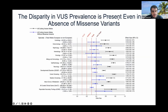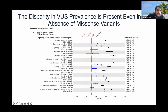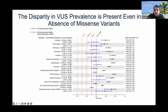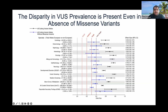The disparity in VUS prevalence is present even in the absence of missense variants. We redid the analysis across each medical specialty — black represents all coding variant alleles, blue represents after removing missense variants. The y-axis is the effect size of the significant difference. All differences remain significant. The black bars are right-shifted relative to their blue counterparts, meaning the significant difference is larger when including all missense variants, but still large to very large for just that last 15-16% of variants.